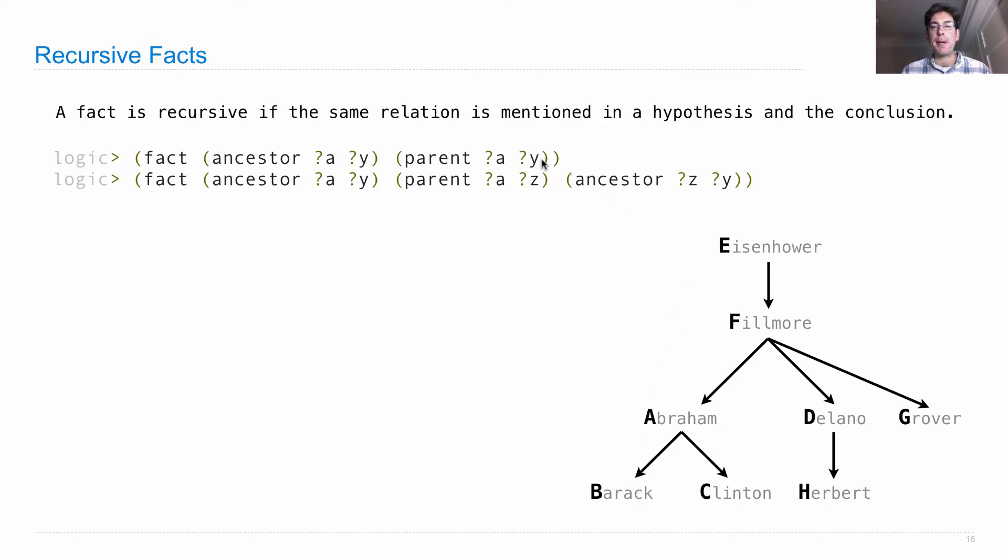So the first fact is the base case of this recursion that says parents are ancestors. And the second fact extends the ancestor relation by one more link. But since it's recursive, it can be applied many times to extend the ancestor chain as long as I would like, walking all the way down through this tree from Eisenhower to Barack.